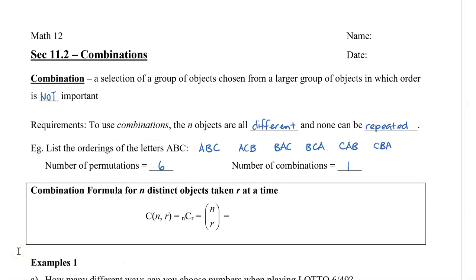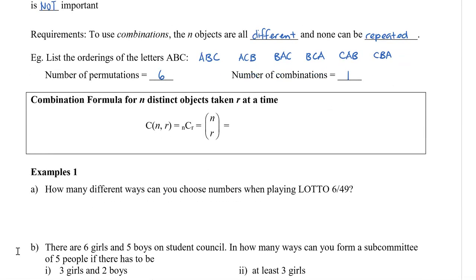Before I introduce the combination formula, let's take a look at another example. In this example, the question asks, how many different ways can you choose numbers when playing Lotto 649? In the game Lotto 649, there are 49 numbers and you need to choose 6 of them to match to win. Let's say that those 6 numbers have to be ordered in such a way to win. So because order matters, we have 49P6. So according to our formula, we get 49 factorial divided by 49 minus 6 factorial. So that's going to be 49 factorial divided by 43 factorial.